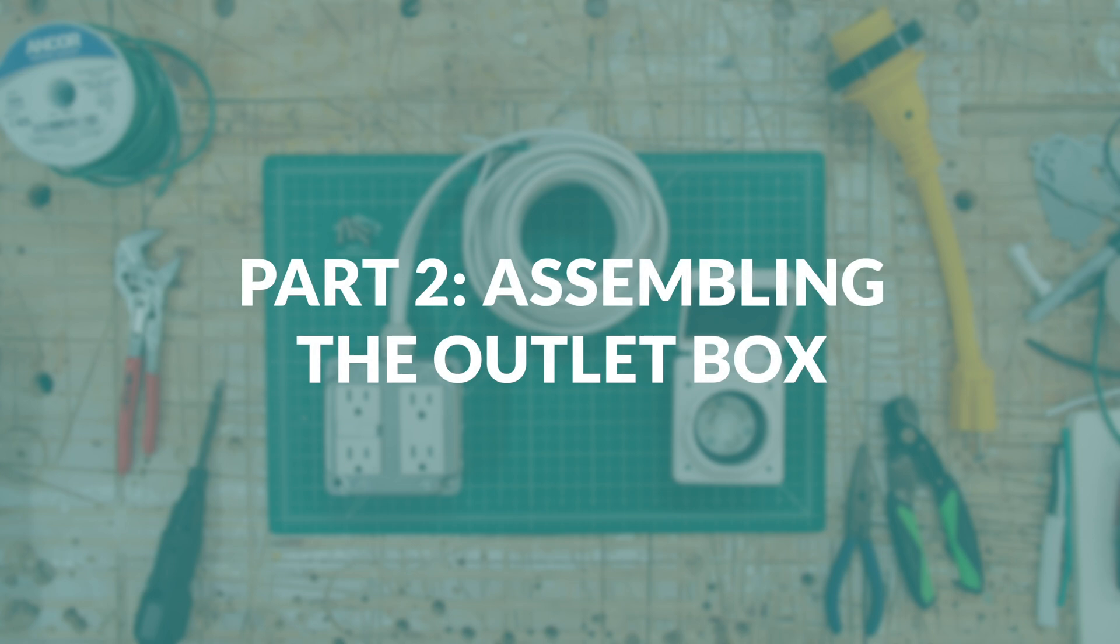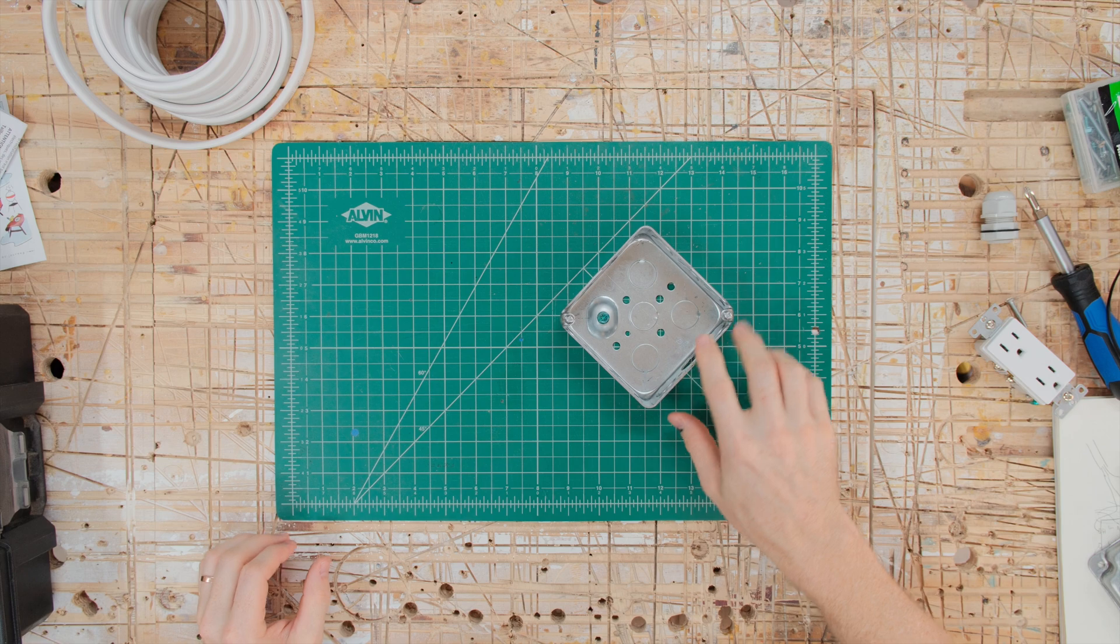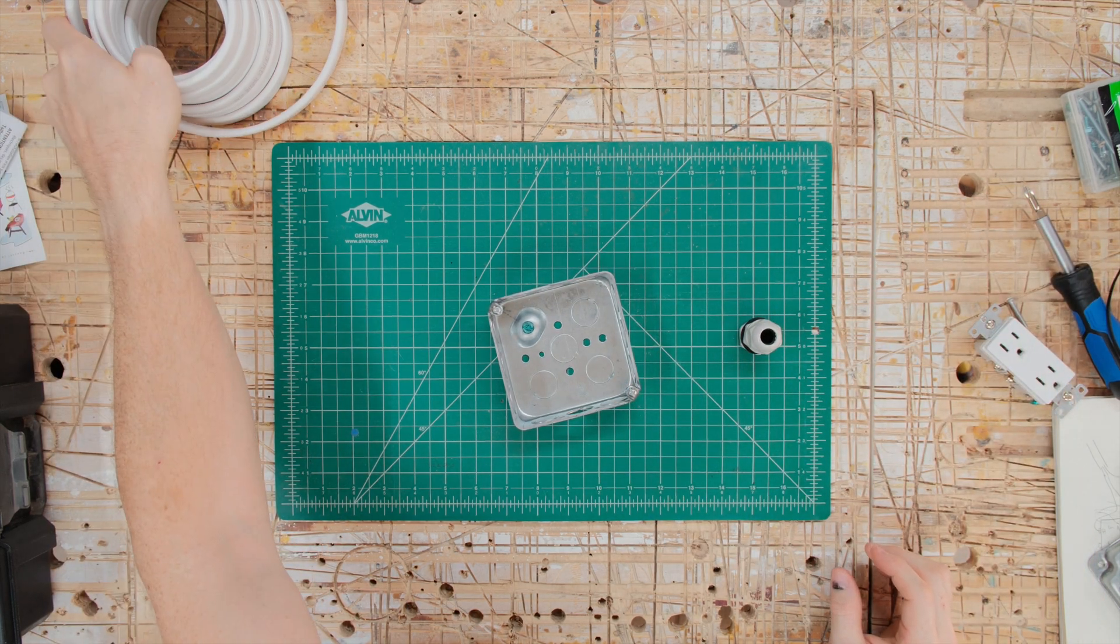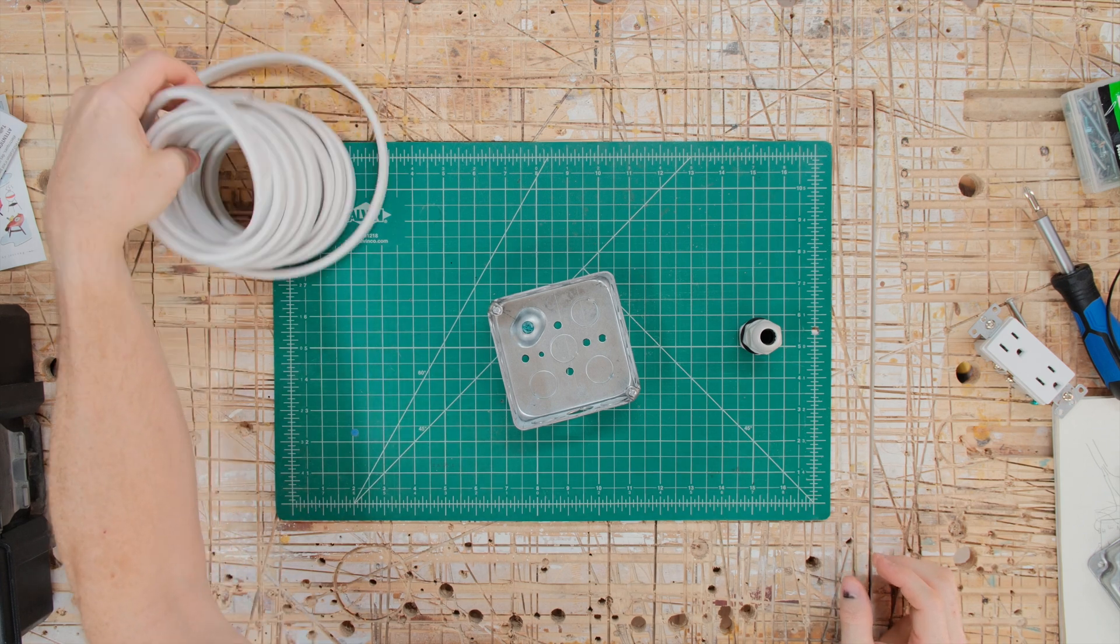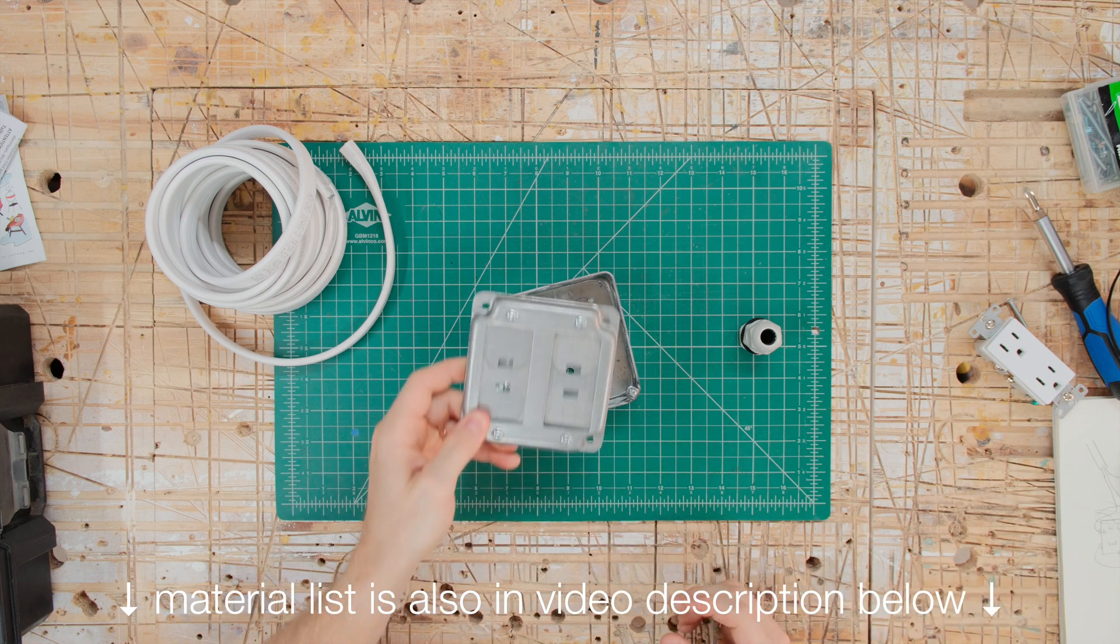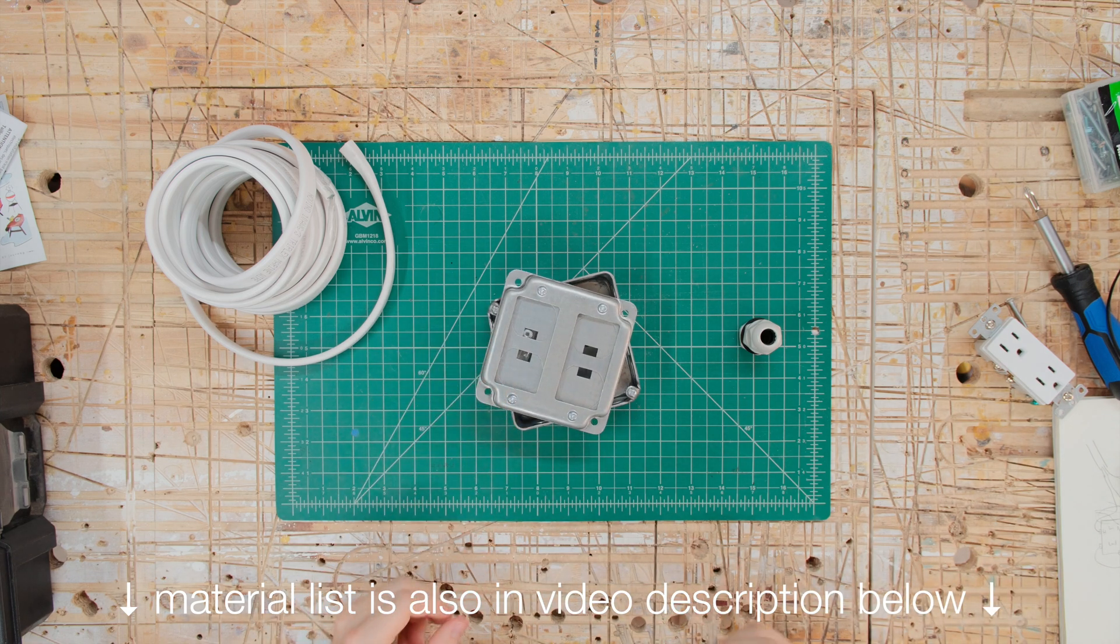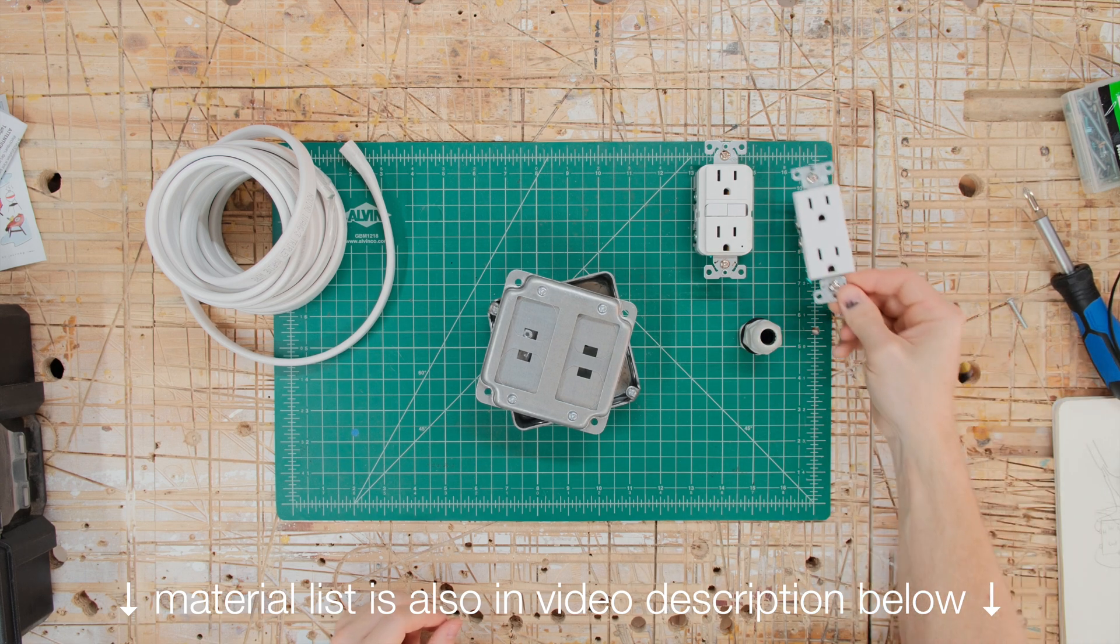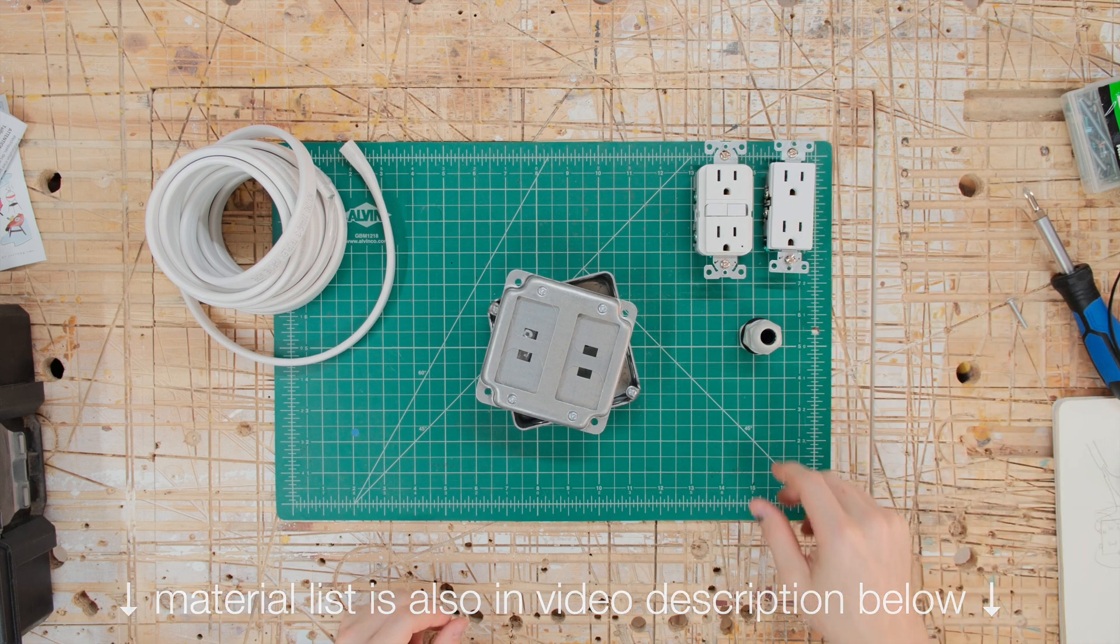While that paint dries, we can assemble the outlet box. Here are all the different parts needed to piece this together: a two-gang metal outlet box (I'd recommend the type with rounded edges rather than square), a cable entry gland, 10 AWG marine triplex wiring, a cover plate for the metal outlet box, a GFCI outlet, and finally, a normal outlet. I'll link to all the parts in the description below.